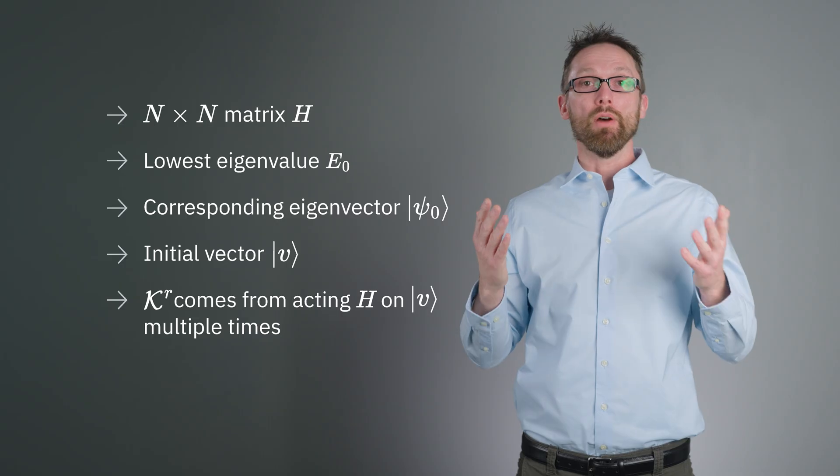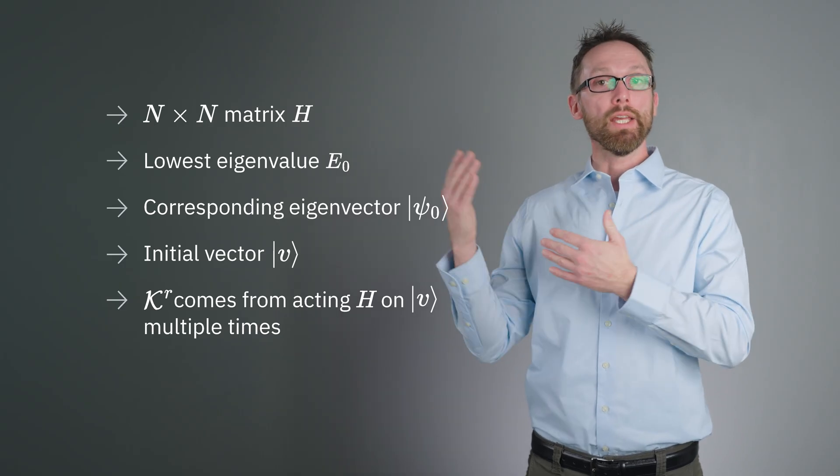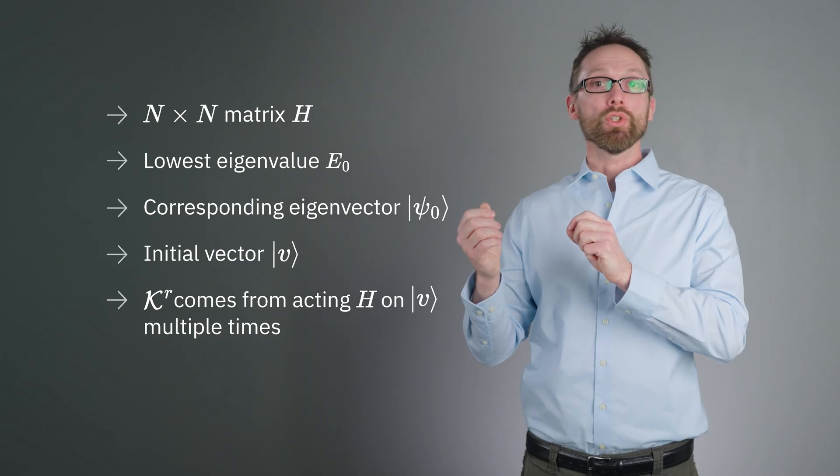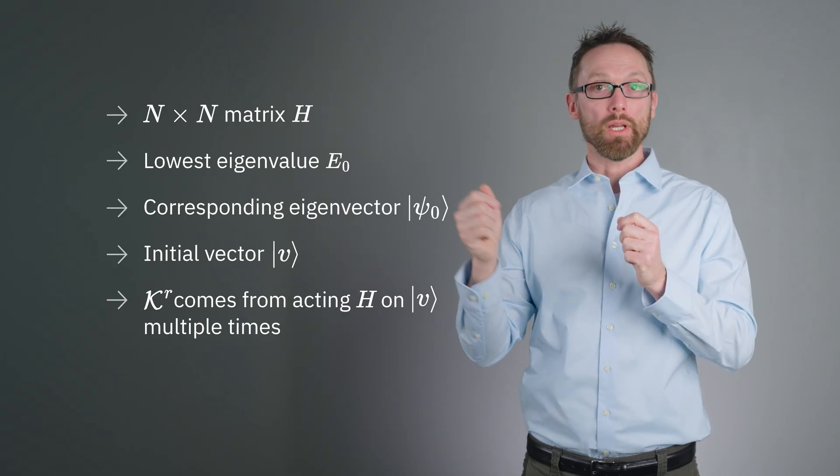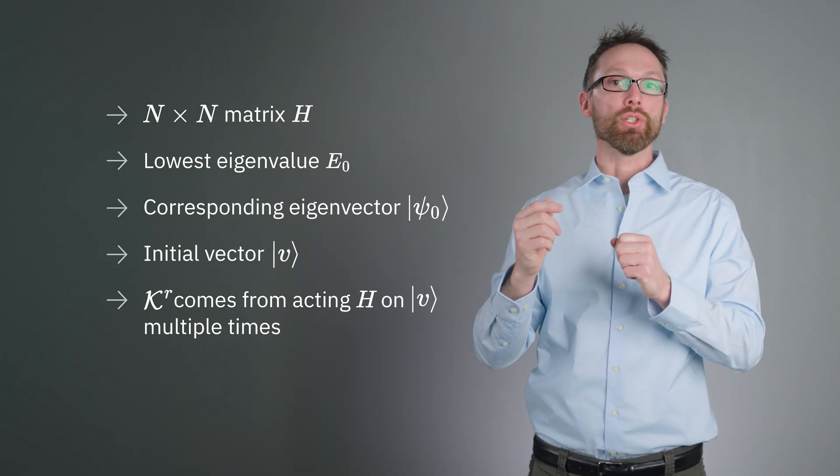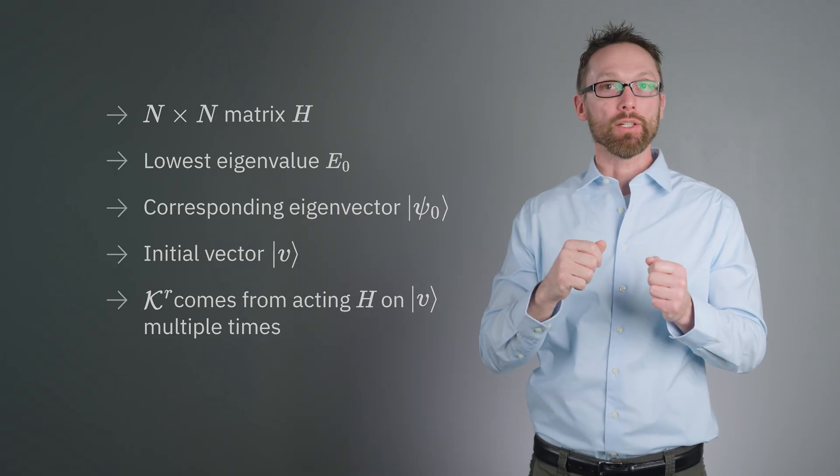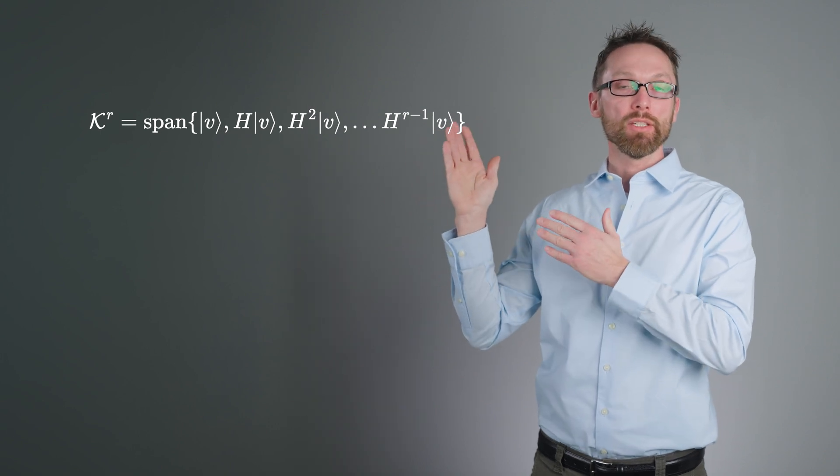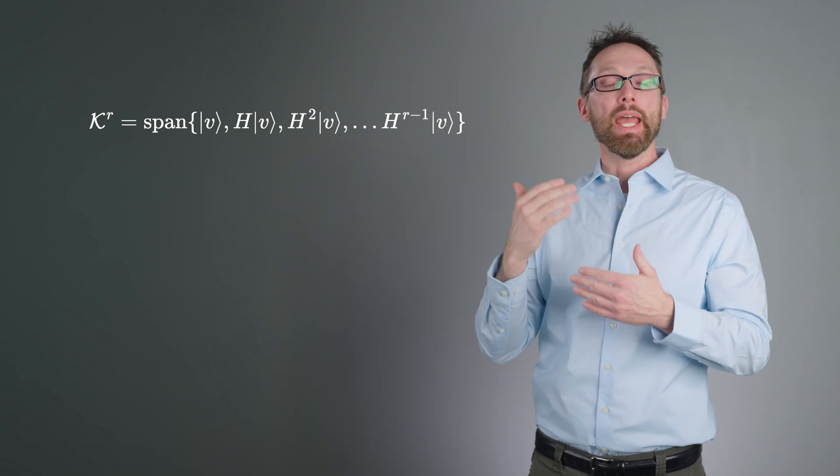The Krylov subspace of order R, which we write kr, is generated by acting with H on this initial vector R minus 1 times, adding the result of each subsequent H action to the set of spanning vectors. That is, kr is the space spanned by the vectors V, HV, H squared V, and so on. These vectors will not generally be orthogonal.